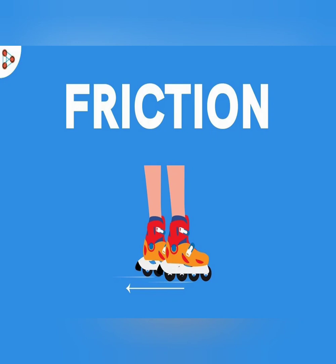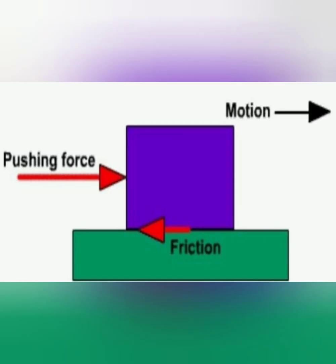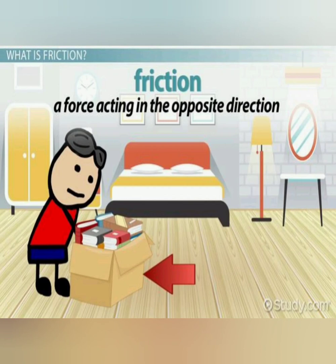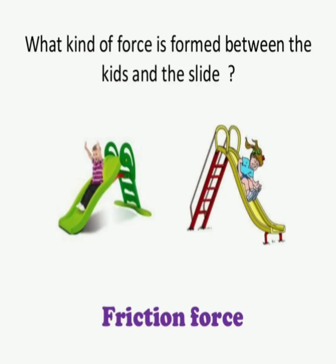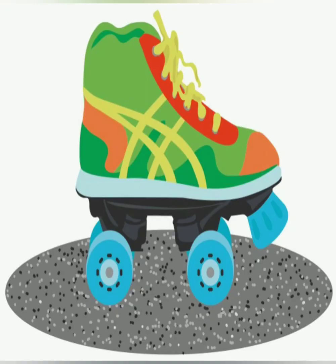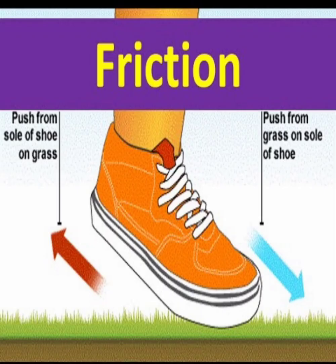Friction is the force that opposes the motion of an object. When you push a ball, it stops rolling by itself because of the force of friction between the ball and the ground. Frictional force slows down a moving object. We are able to walk because of frictional force — we don't slip because of the friction between our shoes and the floor. There is less friction on a smooth surface compared to a rough surface.